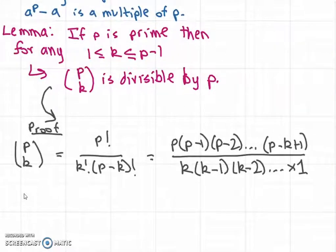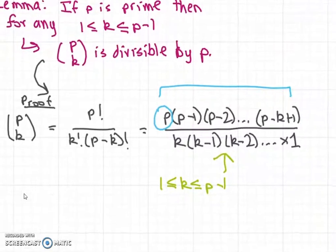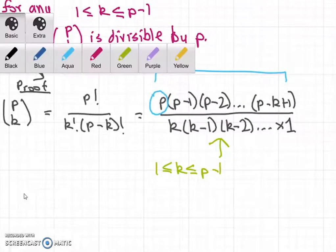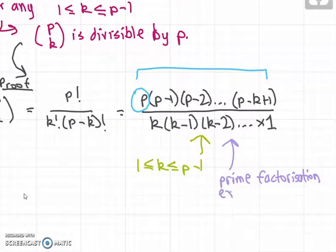We can see that in the numerator of this fraction we have the number p, which is divisible by p. But in the denominator you have the product of numbers which are less than p, because k is between 1 and p minus 1. Therefore, since p is a prime number, the exponent of p in the prime factorization of the denominator is zero.